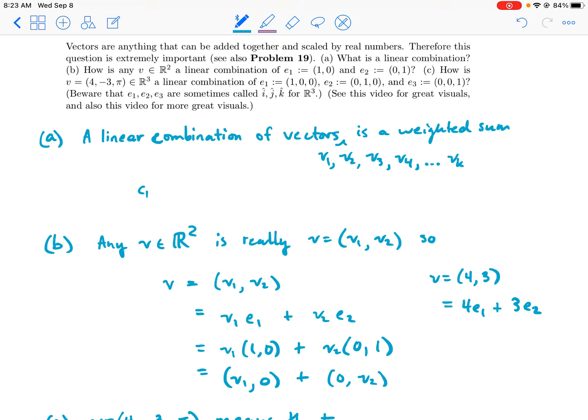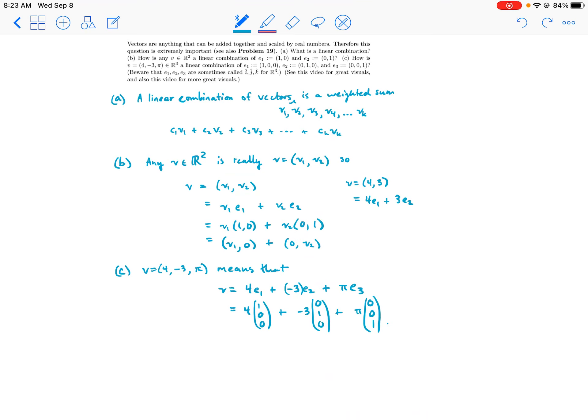Okay, a linear combination of vectors is a weighted sum: c1·v1 + c2·v2 + c3·v3 + ... all the way to the last vector. However many vectors you have—like maybe k is equal to 7, then there would be 7 terms in this sum.